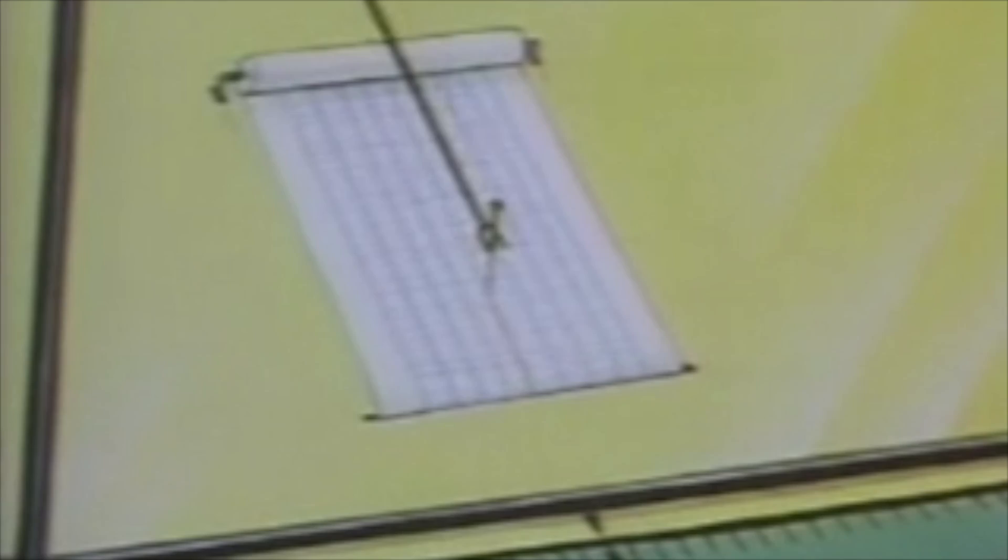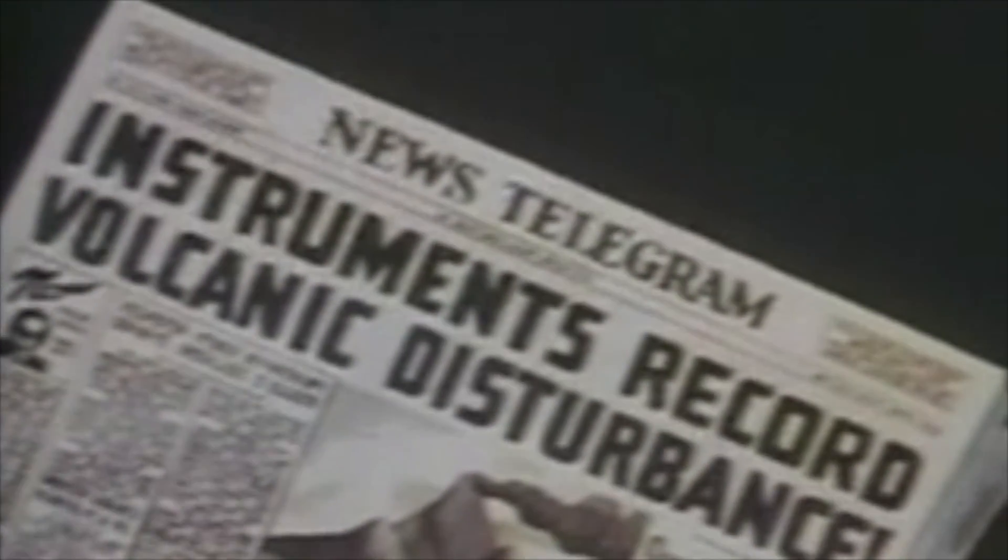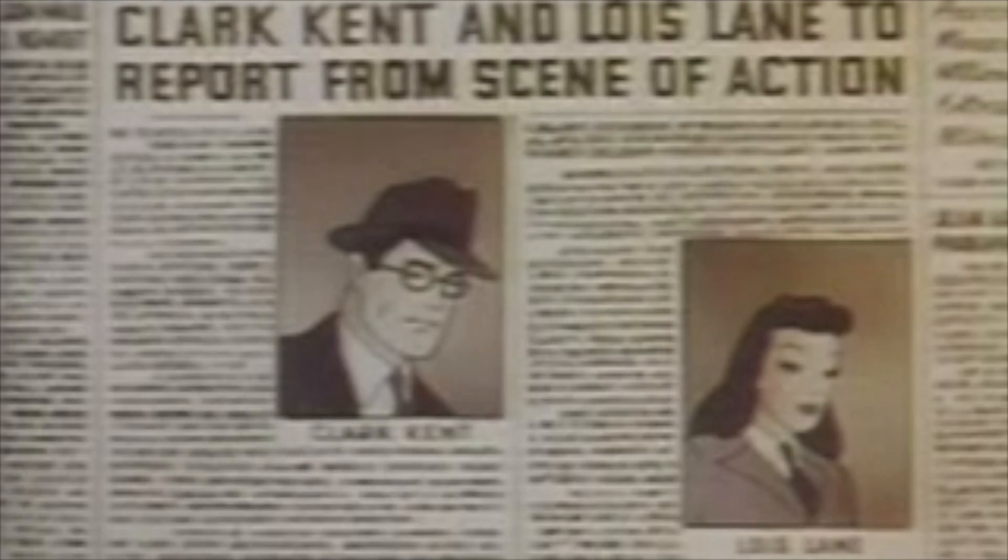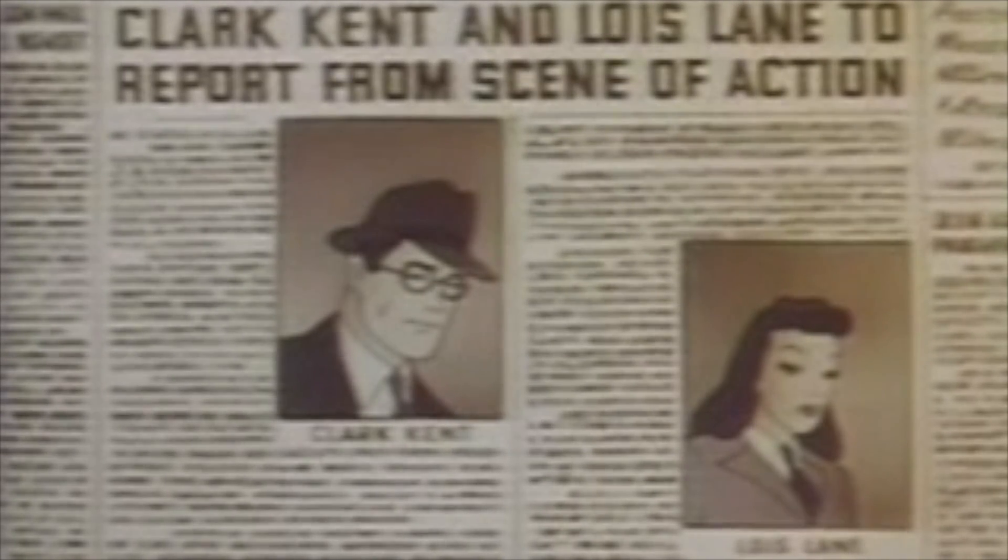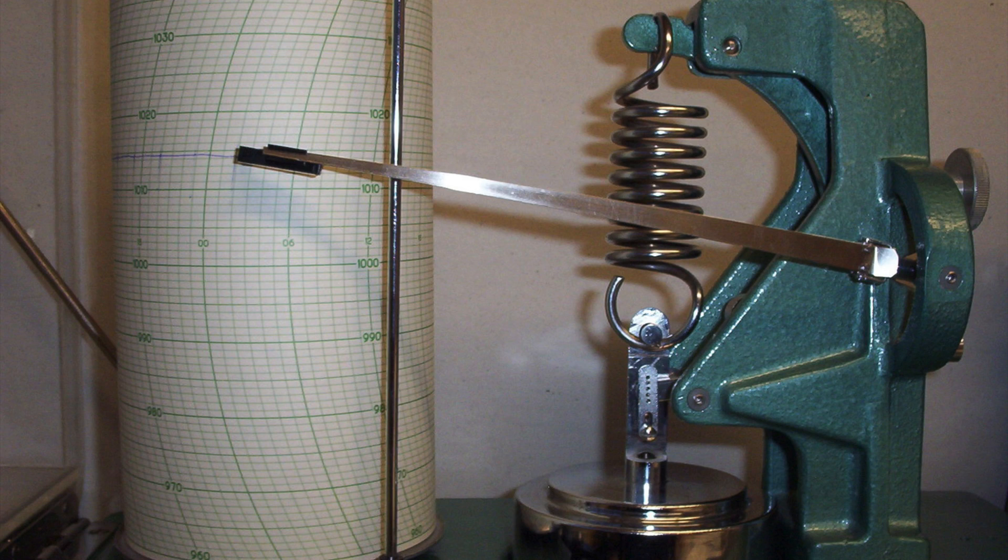One of the simplest chart recorders is the seismograph. You just put a marker in the middle of a chart and attach it to a very delicately balanced thing, and then if the thing jiggles at all because of an earthquake, that line is going to wiggle. And how big it wiggles is how big the earthquake was. It's not too hard to make a barometer into a chart recorder. That's called a barograph. You attach the marker onto some kind of squishy balloon or something that gets bigger or smaller when the pressure changes.